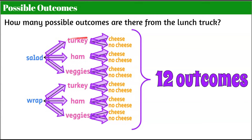Six choices on the salad and six choices on the wrap. If you look at your tree diagram and count down the last outcomes from the tree branches, it gives you 12. So that final column tells you how many possible outcomes there are. We could visit this lunch truck 12 days in a row and every one of the 12 days would be a different outcome.